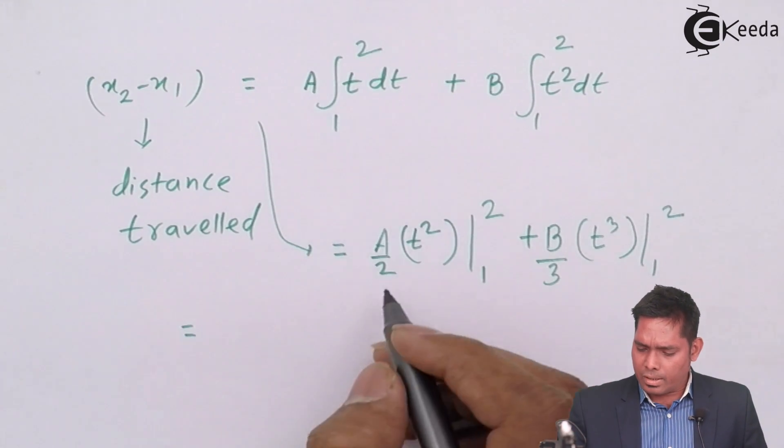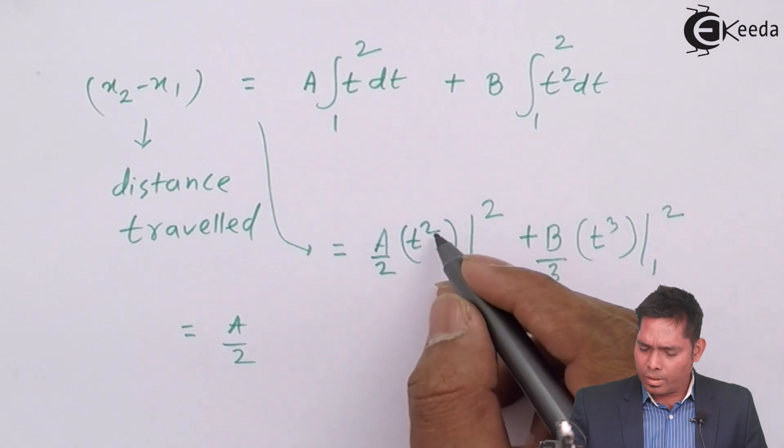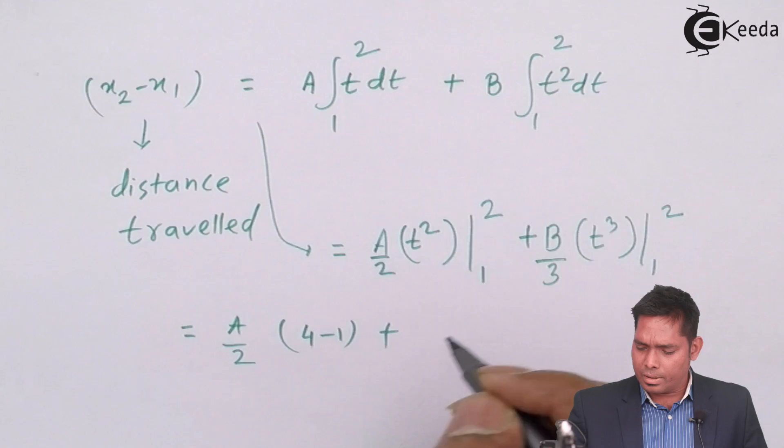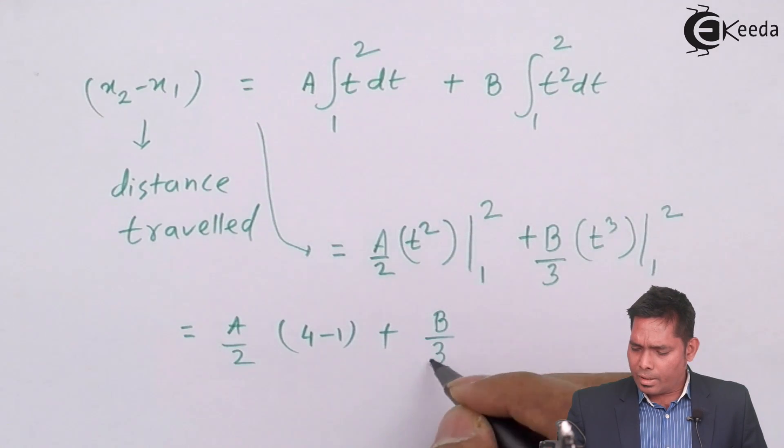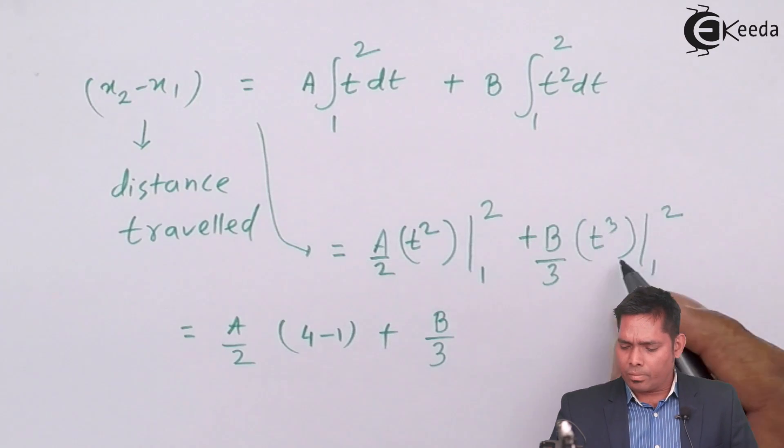If you solve this, then it is A by 2, this will be 2 square, that is 4 minus 1, plus B by 3, it is 2 to the power 3, that is 8 minus 1.